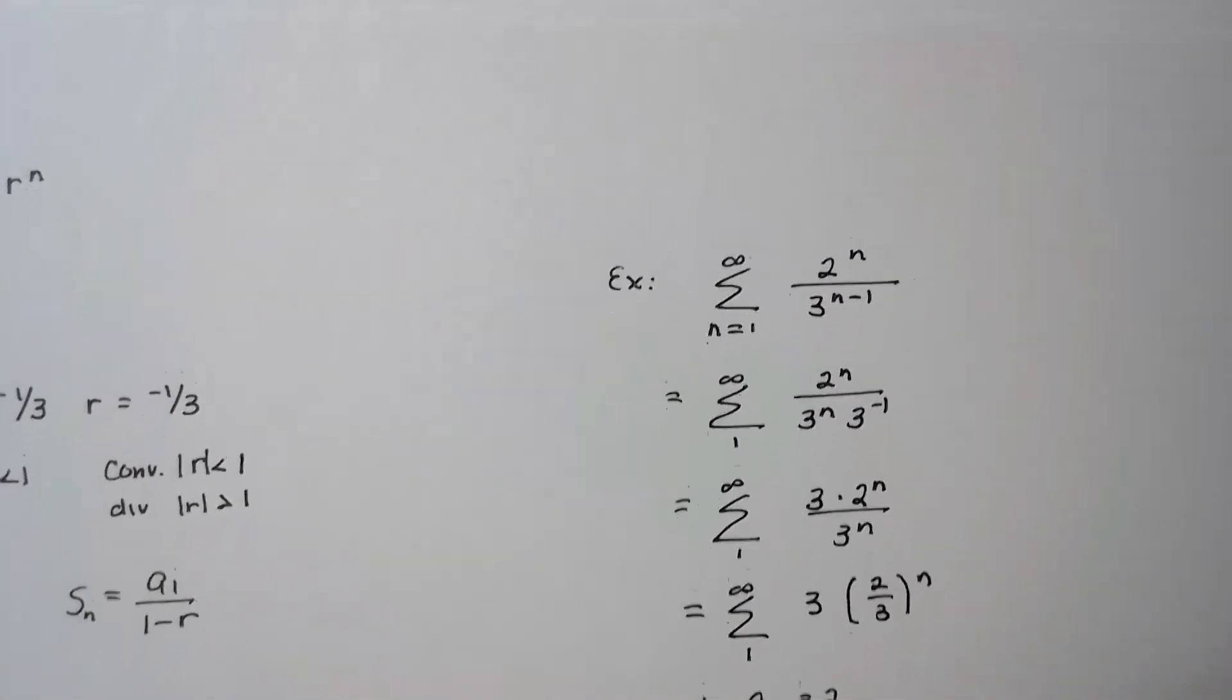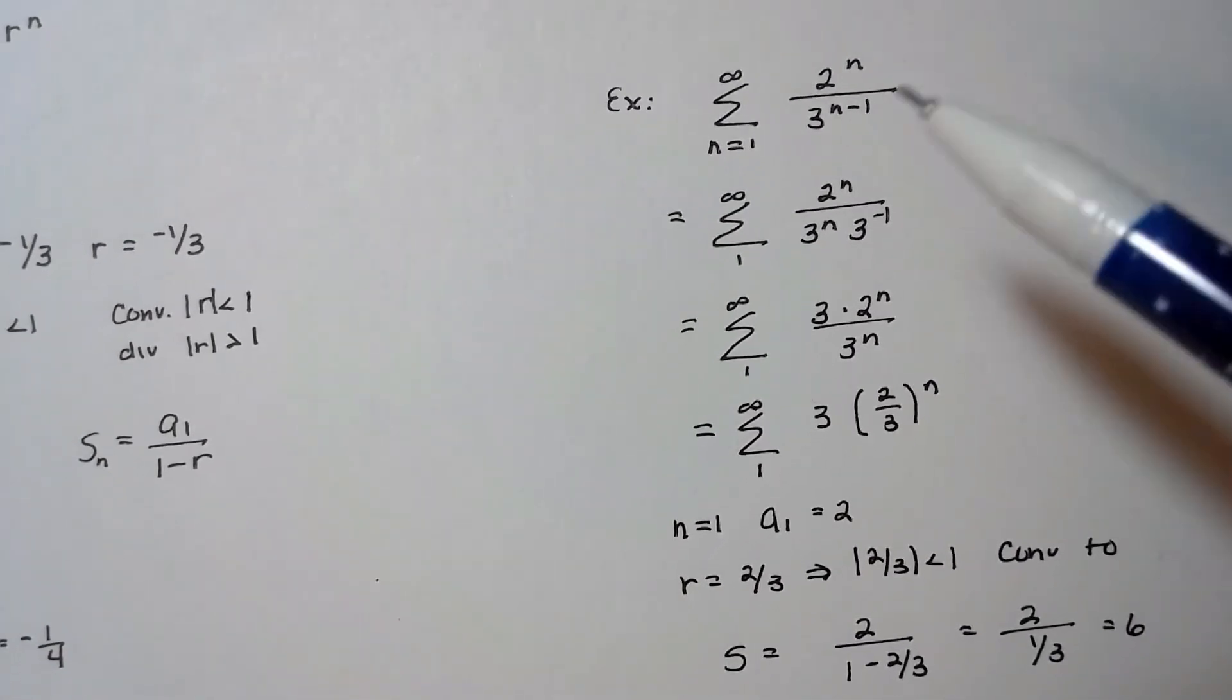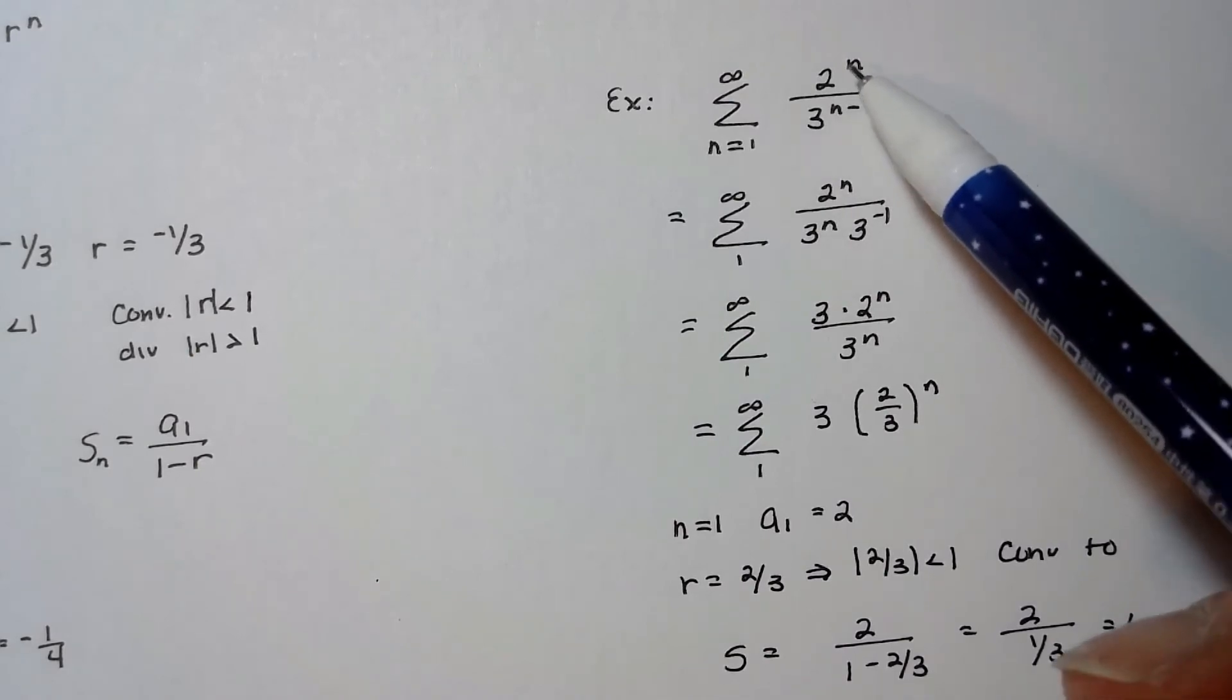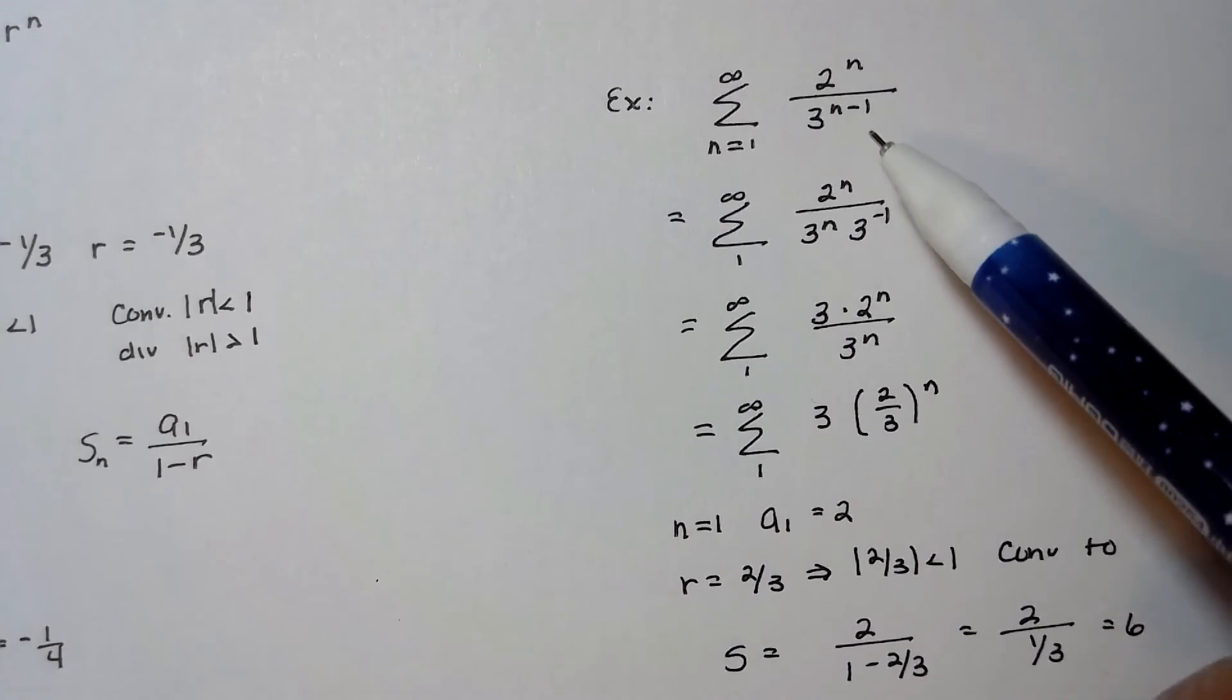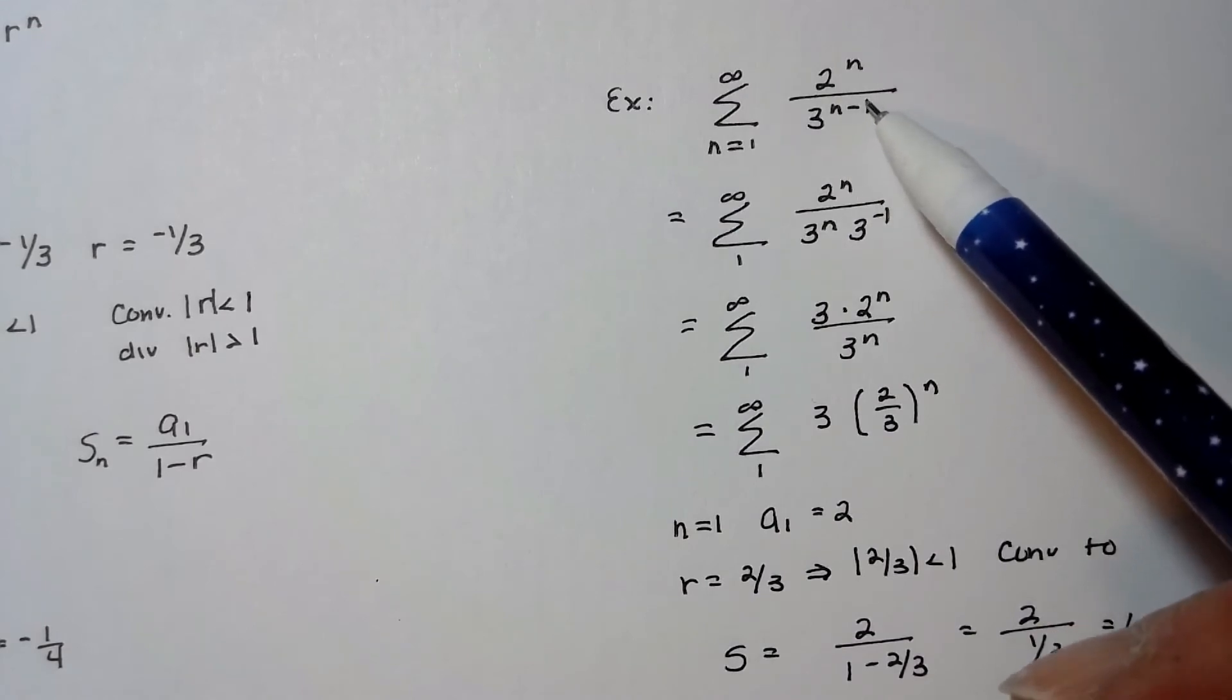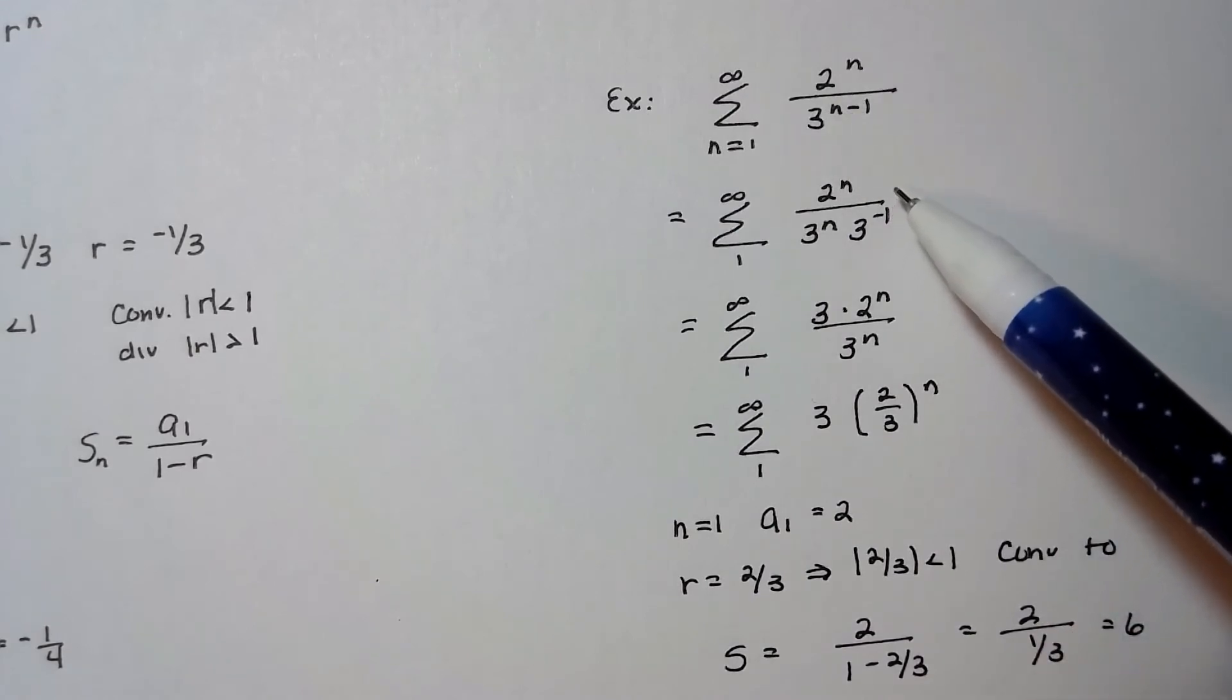Another example here, this one's a little bit easier maybe to spot. I think I put this one on the test. I don't have the test with me, but I believe I had one similar to this. This is 2 to the n over 3 to the n minus 1, so this is all an exponent here.